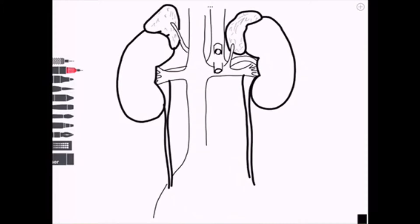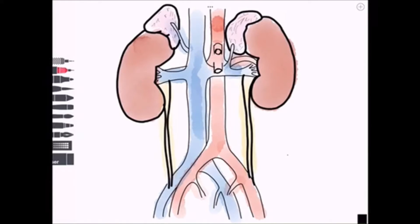In order to filter blood plasma, the kidneys receive approximately 25% of cardiac output. So here's the IVC, and here's the abdominal aorta.